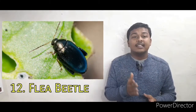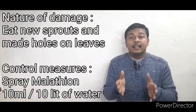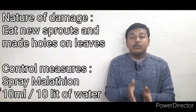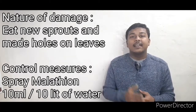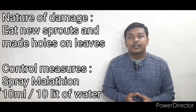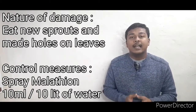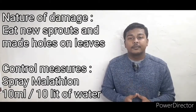The next pest is the flea beetle. The crop plant affected is grape. They eat the new sprouts and make holes in the leaves. To control this, spray malathion at 10 ml in 10 liters of water.